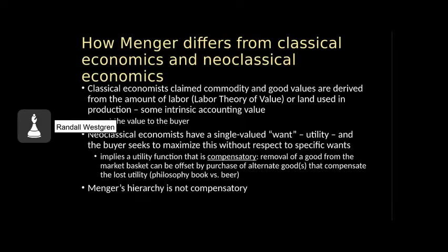What we just talked about is a point in the history of economic thought between classical economics, where goods' values were always considered intrinsic — either by the amount of labor that had gone into the good, or some other combination of factors of production, most often land. This would be the labor theory of value or the Ricardian theory of value. These things were not located in the mental states of buyers. Menger makes this change, placing the valuation at the point of exchange between buyers and sellers, and this became much more central to the neoclassical economics that followed.